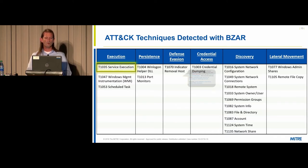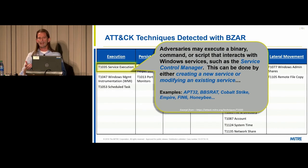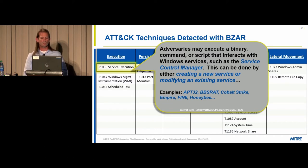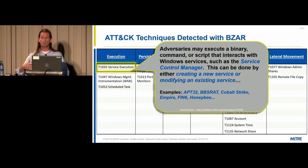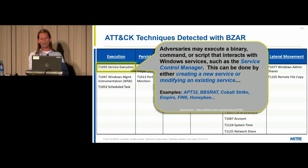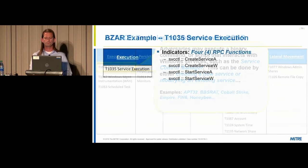Starting with service execution: the ATT&CK website states that adversaries may execute a binary, command, or script that interacts with Windows services such as the Service Control Manager. This can be done by creating a new service or modifying an existing one. Threat groups like APT 32 and FIN6 use this technique, and software like Cobalt Strike implements it. The list of threat groups that use this technique is extensive.